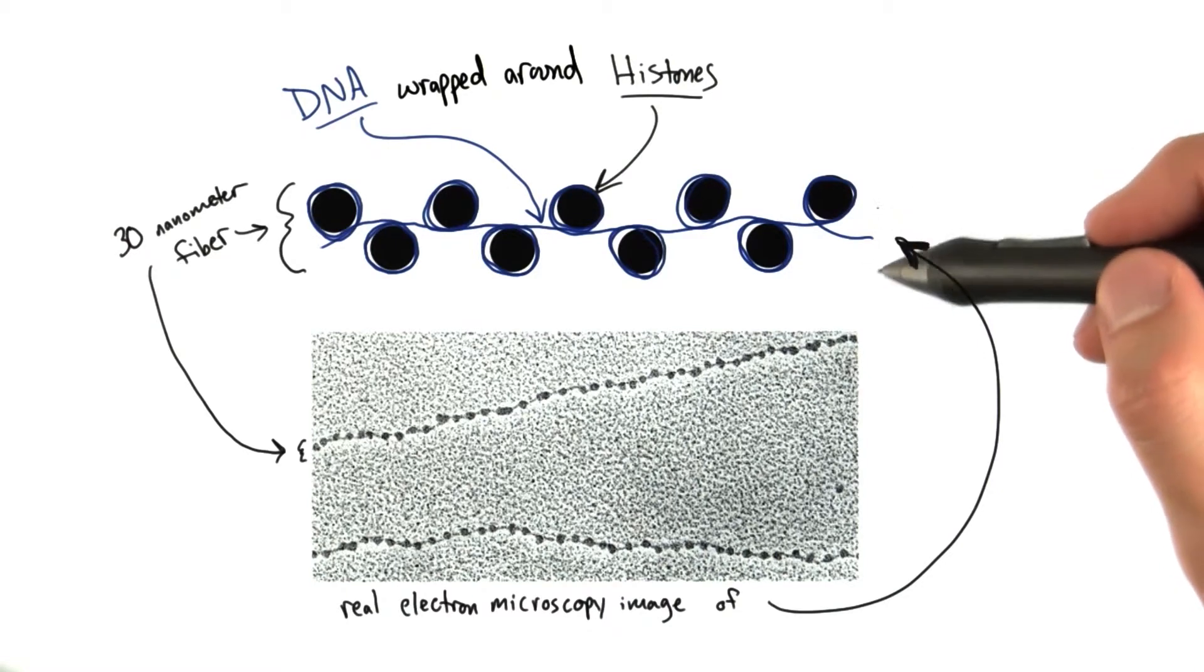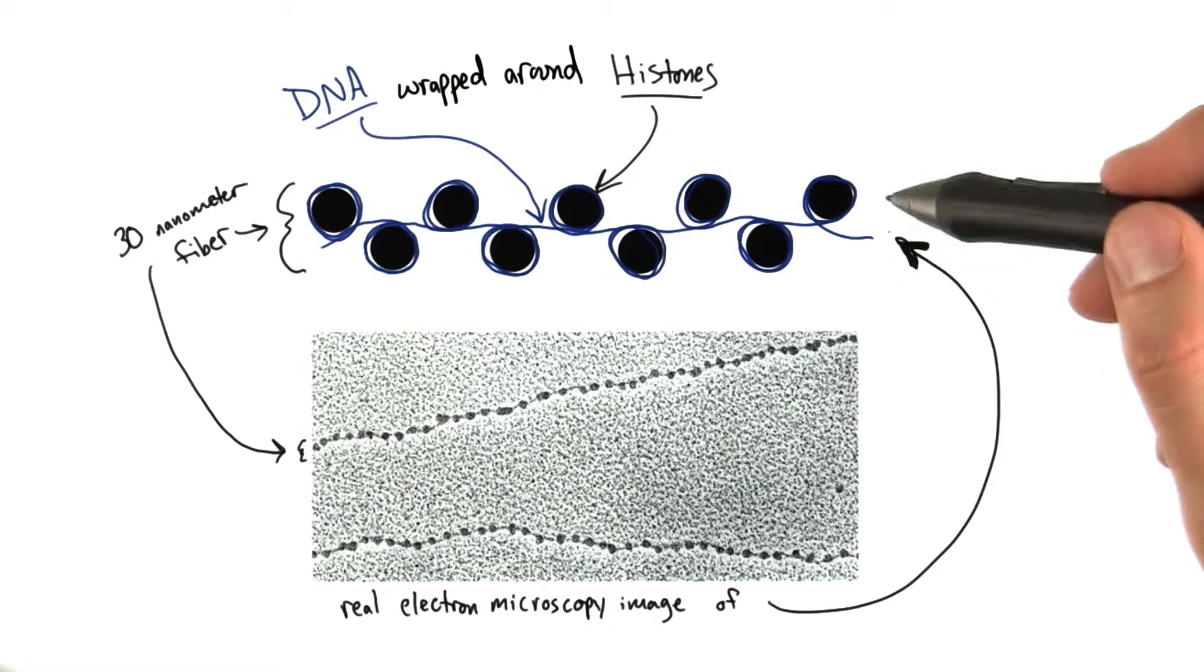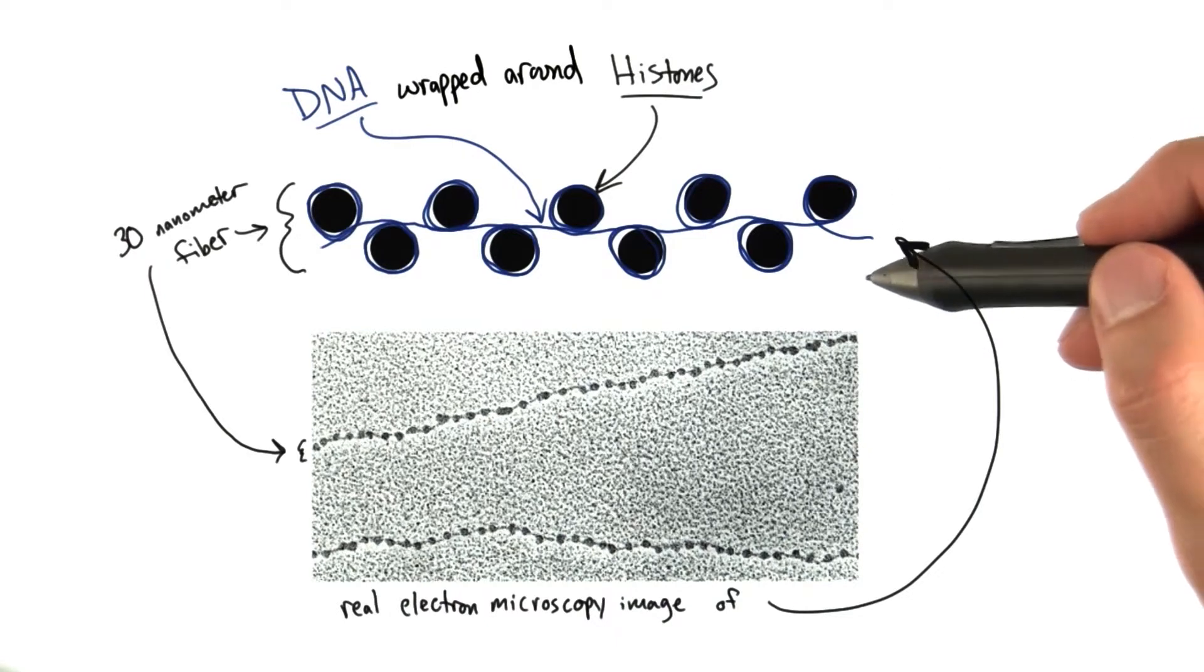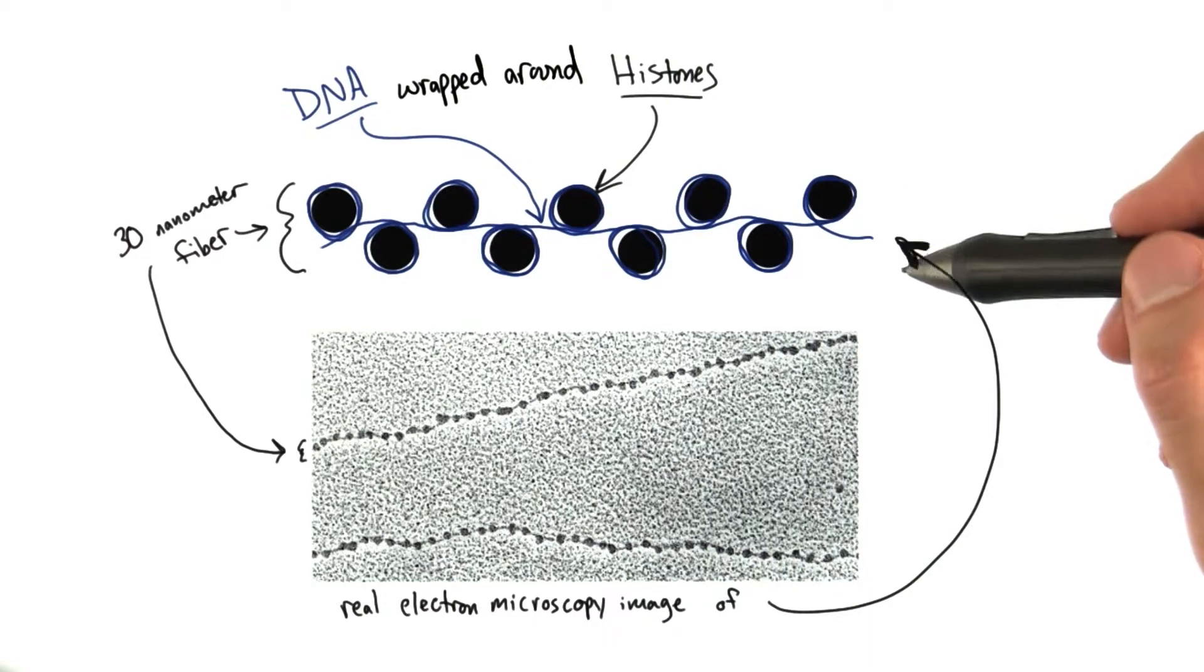Now the folding doesn't stop here. The 30 nanometer fiber will actually start folding on itself here in a minute. And that's what organizes into the really big structure that we're used to seeing called a chromosome.